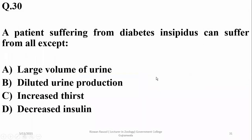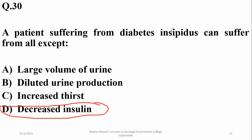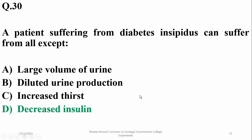A patient suffering from diabetes insipidus can suffer from all except: this disease is not related to insulin — it is related to ADH. So decreased insulin is an irrelevant option here, and D is the answer. Otherwise, large amounts of dilute urine and increased thirst are the indications of this disease.